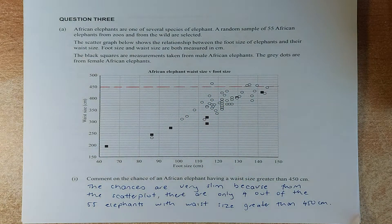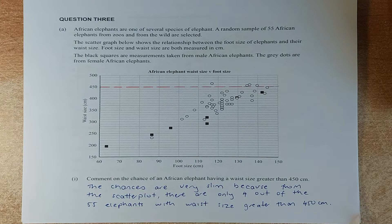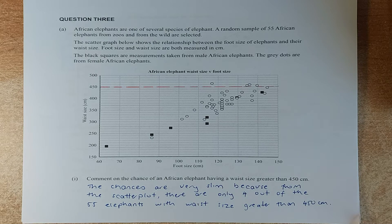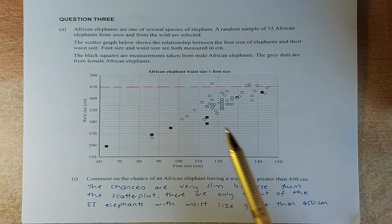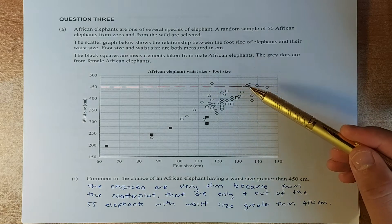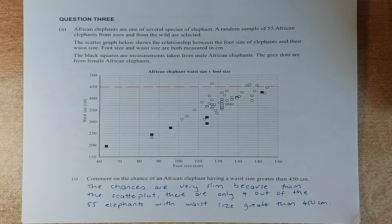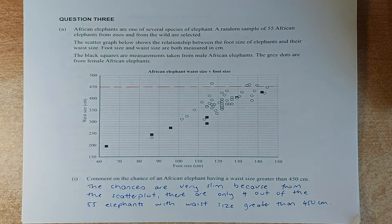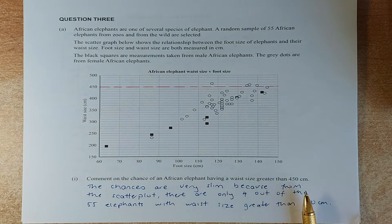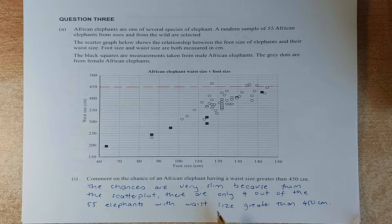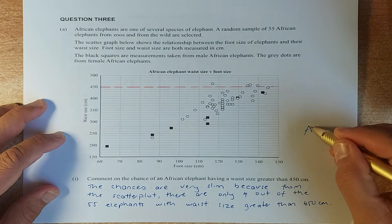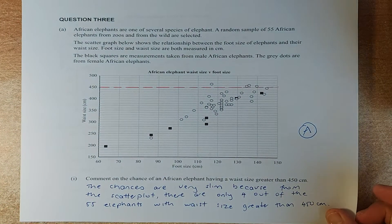Now we are going to answer the first question. Comment on the chances of an African elephant having a waist size greater than 450. From here, we can see that it's quite straightforward - 450 the waist size. So we are going to draw a line there. And we can see that only 4, 1, 2, 3, 4. Only 4 of the elephants out of the 55 have waist that is more than 450. So the chances of getting an elephant that has a waist size greater than 450 is very slim because there's only 4 of the 55 elephants that is greater than 450. And that will give you an achieve. Simple deduction.